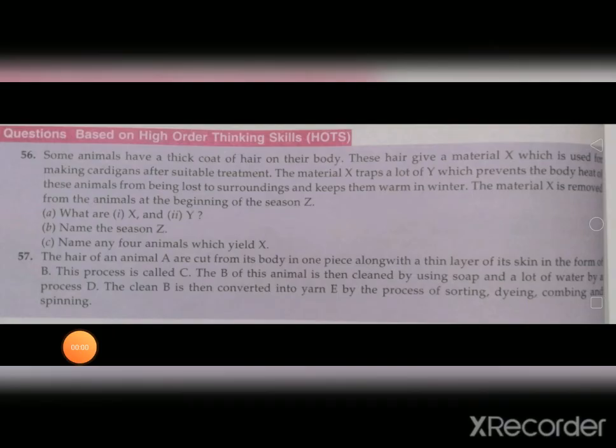Questions forty-one to fifty-five are MCQs that you have to do in the book itself. Questions based on Higher Order Thinking Skills — from question number fifty-six to sixty — you also have to do in the book itself. The answers are given on page number 41. That is all for today.